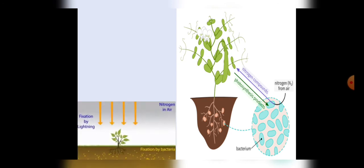Students, nitrogen is very important for plants. If plants do not get nitrogen, then their growth will stop. So the question is how do plants get nitrogen? Plants get nitrogen through a process which is called nitrogen fixation.